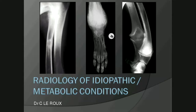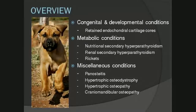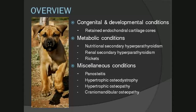Good morning ladies and gentlemen and welcome to the DIM 400 musculoskeletal section on radiology of idiopathic and metabolic conditions. I'm Dr. Leroux and I'll be giving these lectures. The lecture plan is broken down into congenital and developmental conditions — retained endochondral cartilage cores — metabolic conditions including nutritional and renal secondary hyperparathyroidism and rickets, and miscellaneous conditions such as panosteitis, hypertrophic osteodystrophy, hypertrophic osteopathy, and cranio-mandibular osteopathy.